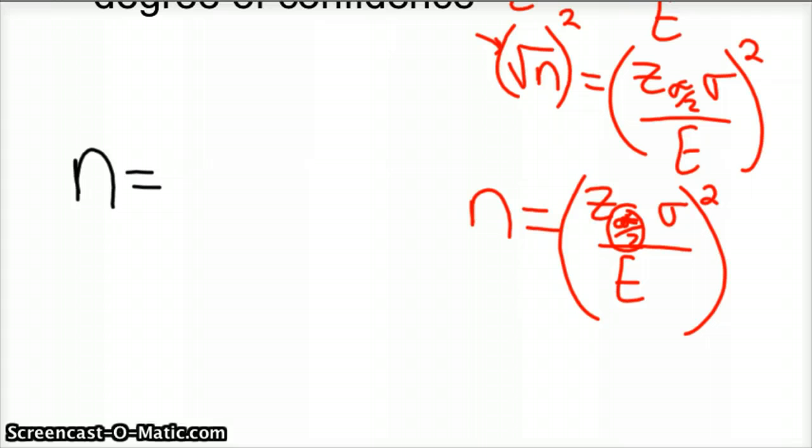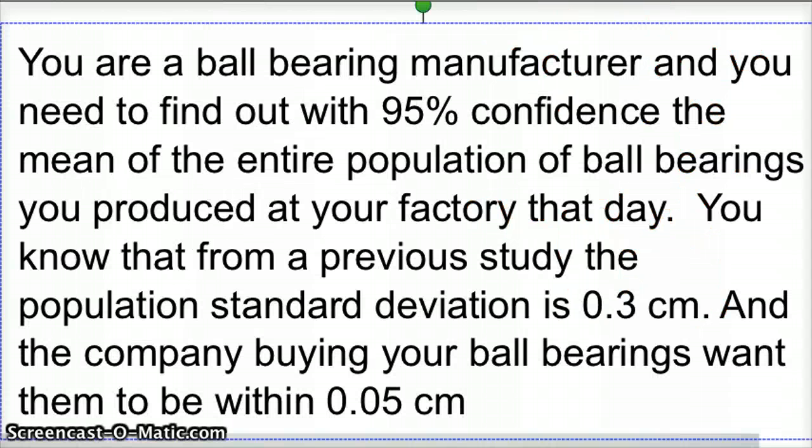So your sample size is always determined by your z-score and your standard deviation divided by how much error is required for what you're doing, and then squared. So we'll come back to that equation and try one here.